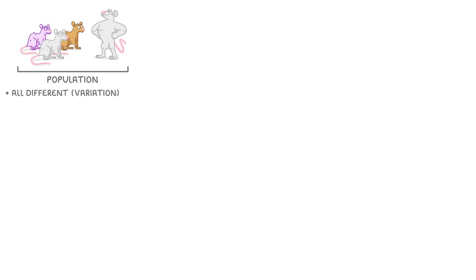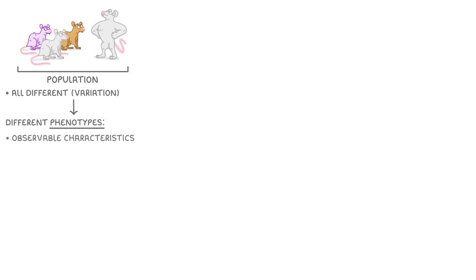If you take a look at a group of individuals in a population, you'll notice that they're all different, and in biology we call this variation, as each individual has different phenotypes. A phenotype describes the observable characteristics of an individual due to the interaction of two things: their genes and their environment.